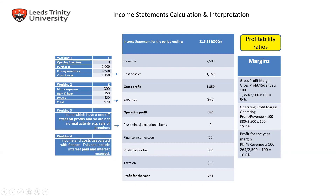In the income statement we also have the gross profit margin, operating profit margin, and profit for the year margin. Gross profit margin shows how much of our revenue is considered as gross profit — for example, out of £100 in revenue, what percentage is gross profit. Operating profit margin works similarly; for example, 15.2% means that out of £100 revenue, 15.2 pence is our operating profit. Profit for the year margin shows the profit after we pay tax — for example, 10.6 pence out of every £100 in revenue.